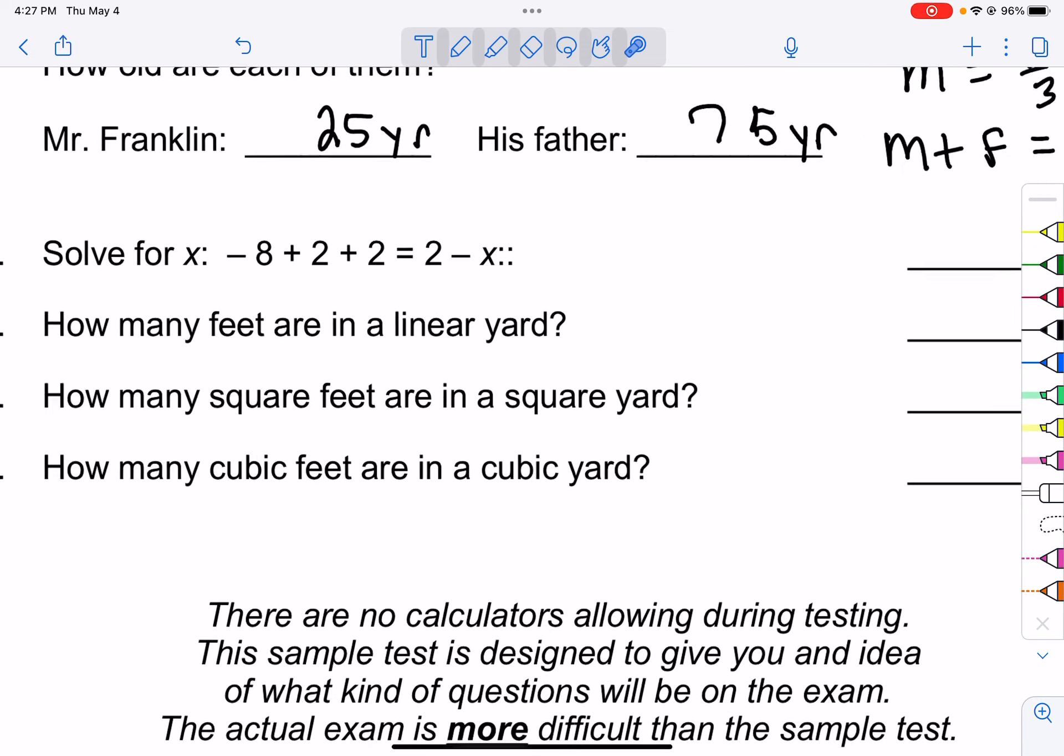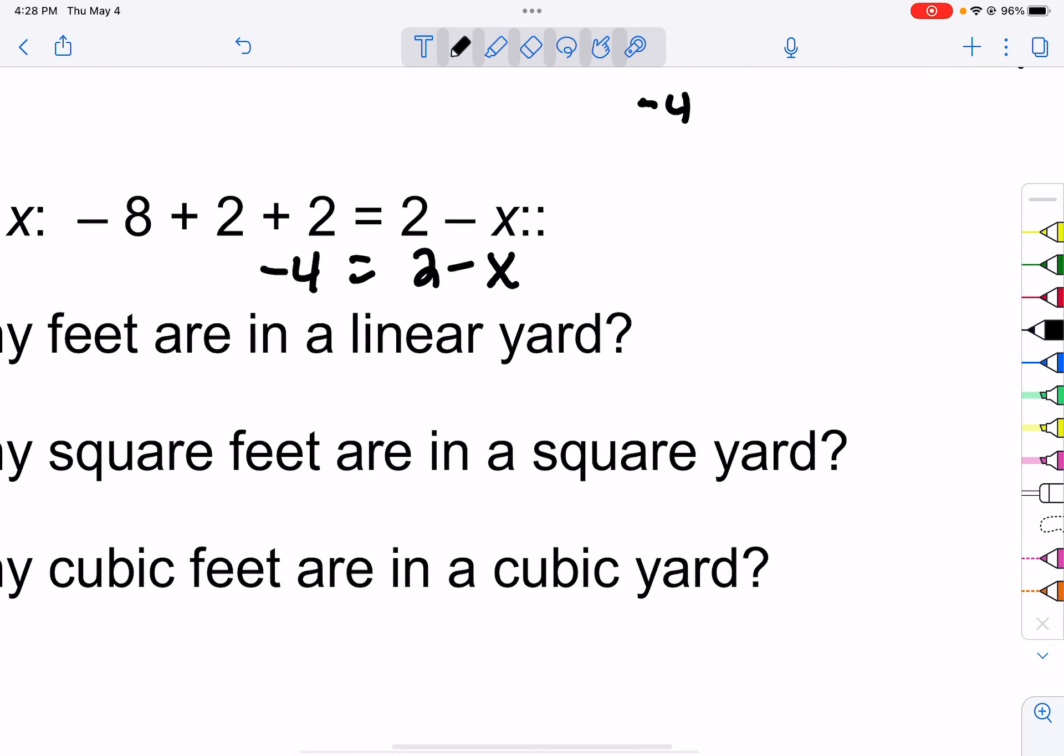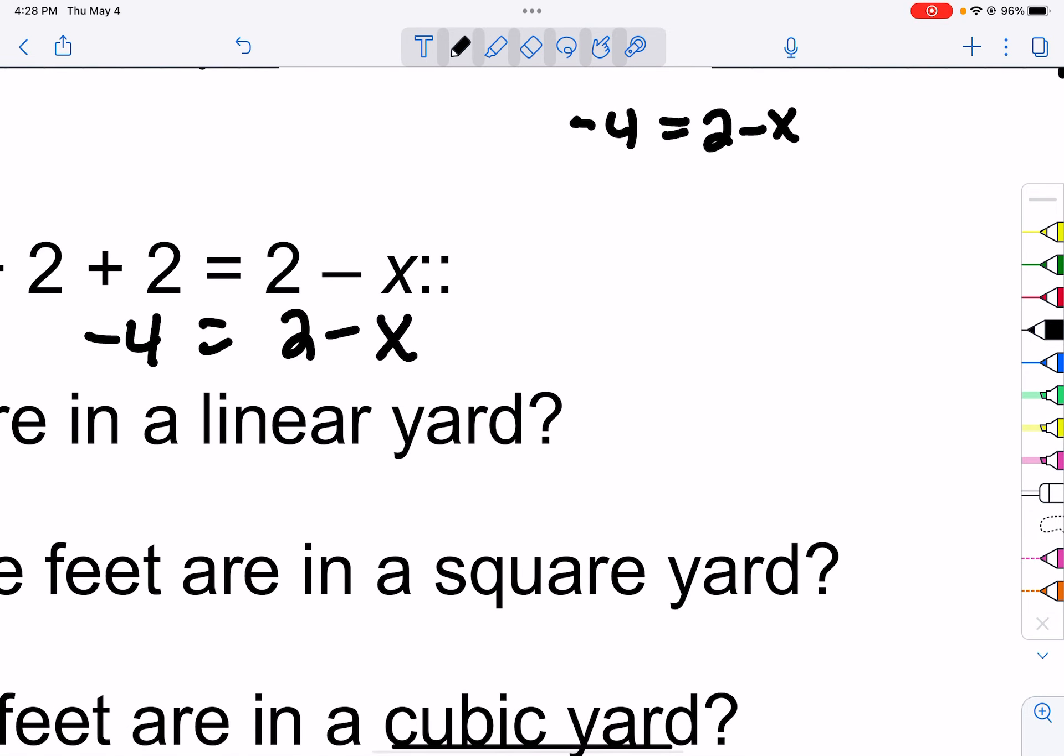Let's move on to problem 16. It's an algebraic equation. So any type of algebraic equation, you're going to simplify each side as much as you possibly can. So you notice here how we've got all that stuff we can do there. Negative eight plus two is negative six, plus another two is negative four. So let's make that negative four equals two minus x. And I'm going to write that what we've got right here.